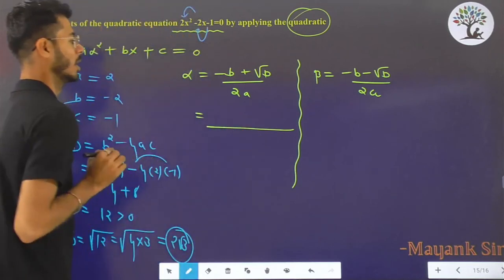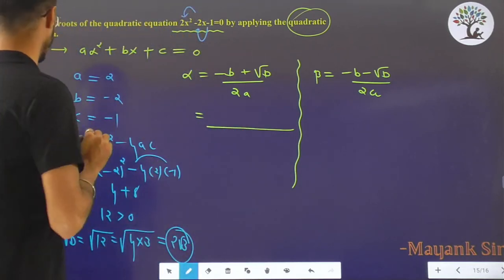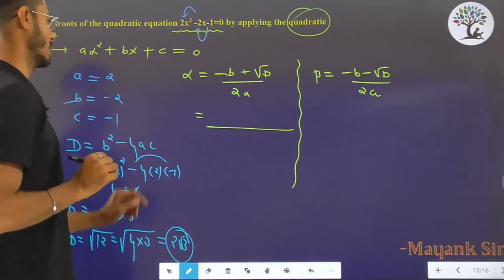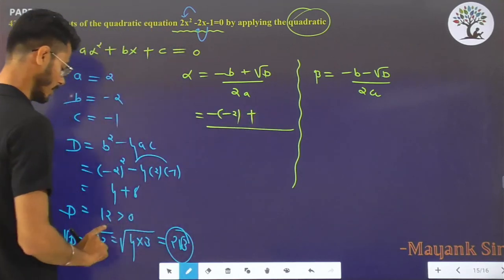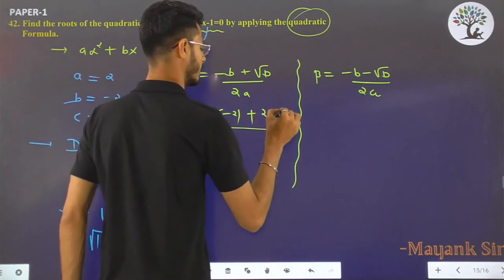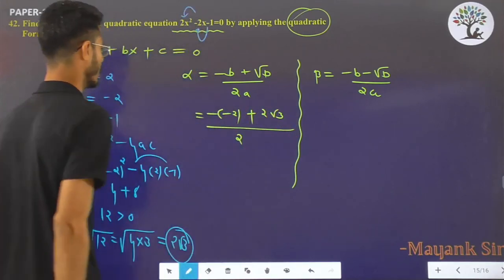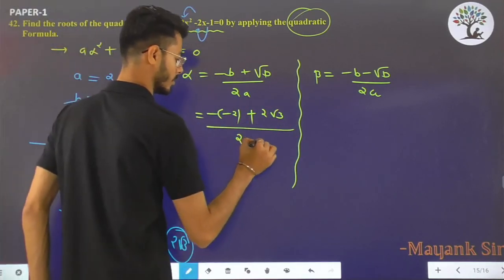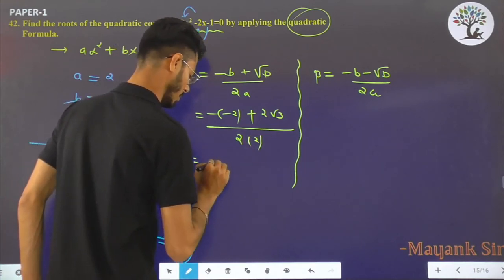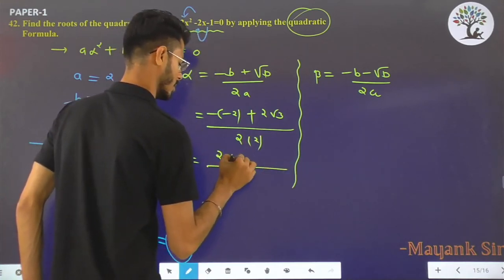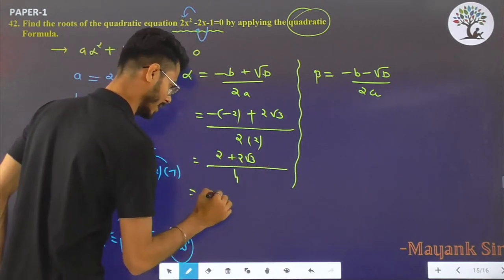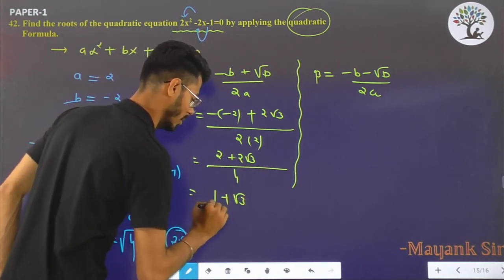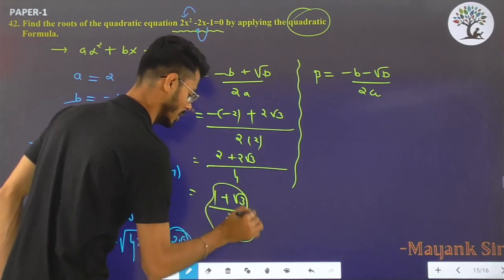Just insert the value of a, b, and c. What is the value of b? That is -2. So minus minus 2 plus value of √D, that is 2√3, divided by 2a, value of a is 2. Minus minus is plus: 2 + 2√3 over 4. Take 2 common and cancel. That means (1 + √3) / 2.